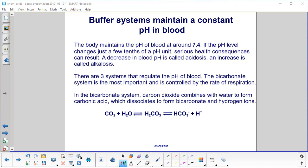Buffer systems keep us alive. Their job in the body is to maintain a constant pH in the blood. It maintains the pH at around 7.4.